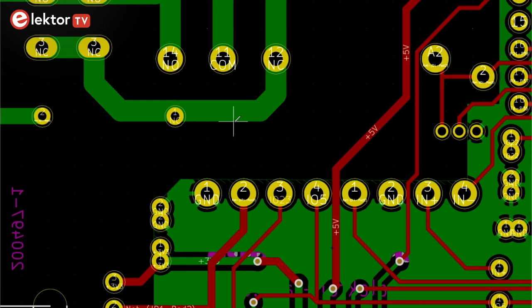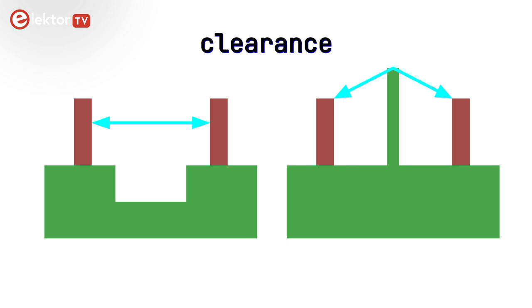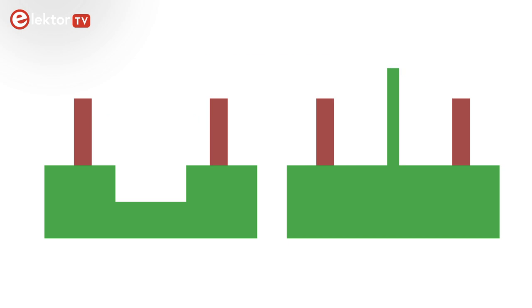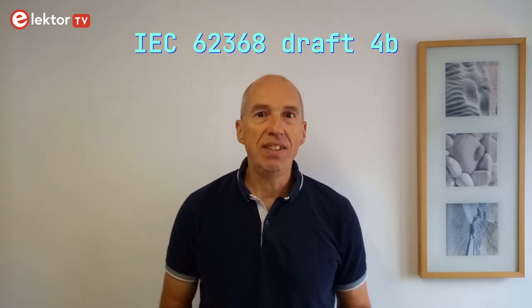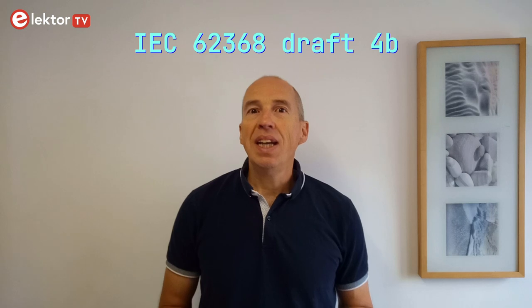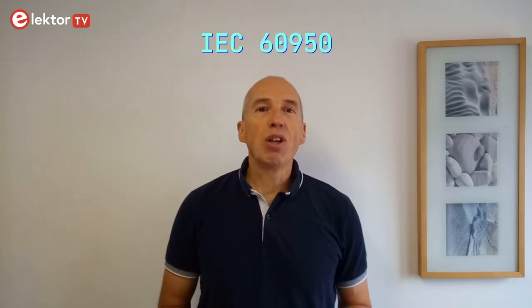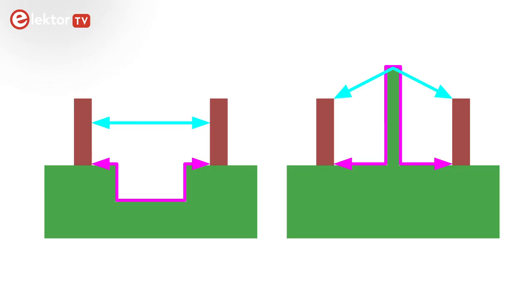We are interested in creepage and clearance distances between a mains connected primary circuit and a low voltage secondary circuit. These are easy to understand concepts. Clearance is the shortest distance between two points through the air — line of sight — whereas creepage is the shortest distance between two points over the surface of the PCB. I will assume that the clearance and creepage parts have not changed a lot since IEC 62368 draft 4b, as they were probably copied from IEC 60950, which was probably stable at this point.